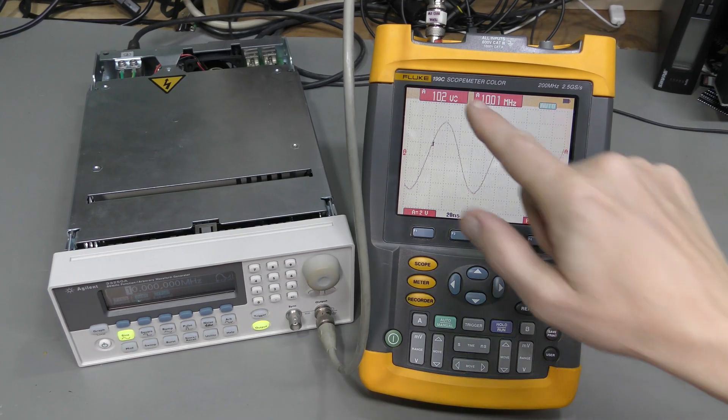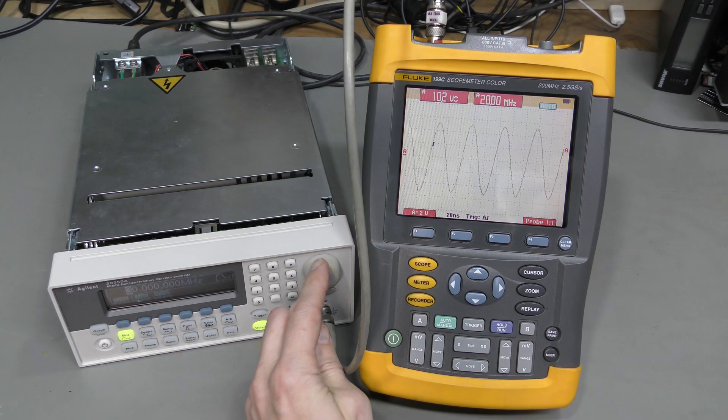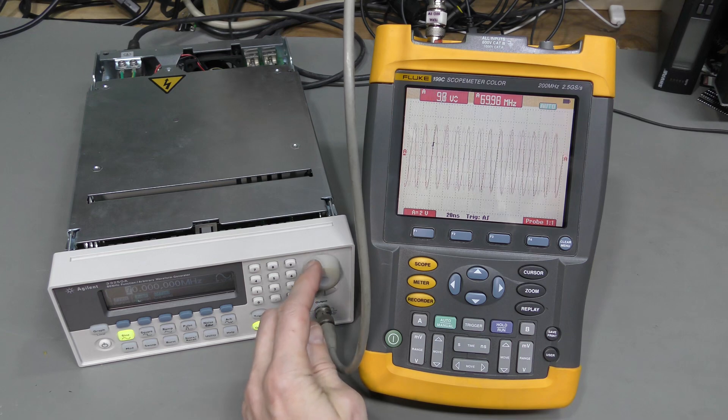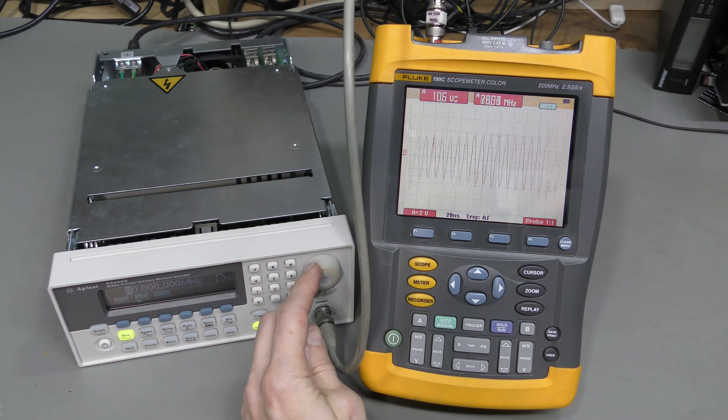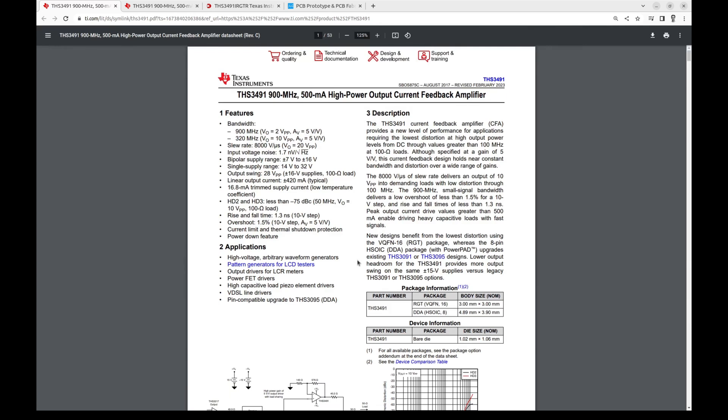So here we are again at 10 volts peak to peak and 10 MHz. Let's increase the frequency. 60, 70. And look at this. The same instability at 80 MHz. Unbelievable. And fine at 70. So, despite of the fact that the datasheet suggests that this QFN16 package, or they also call it RGT, should be used in new designs, so it should be better, I suppose, we still have exactly the same problem.